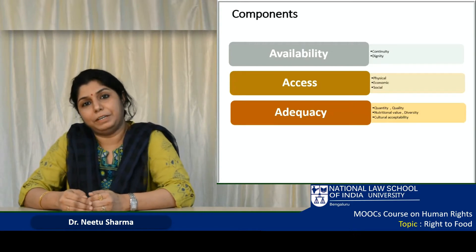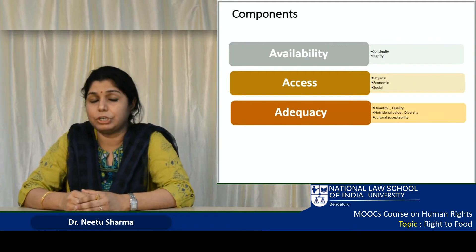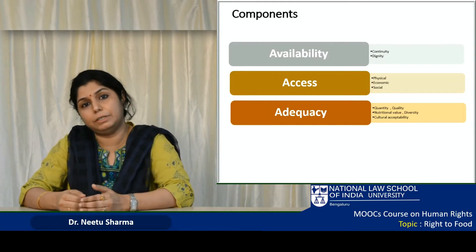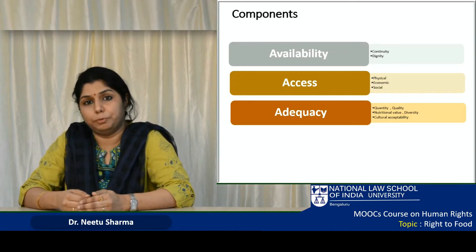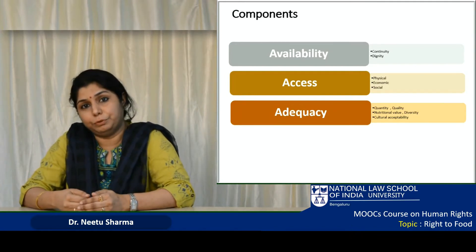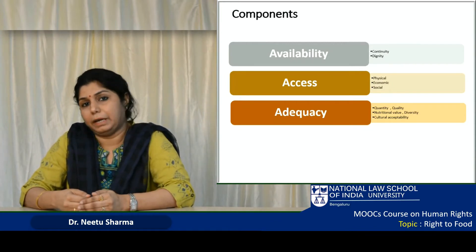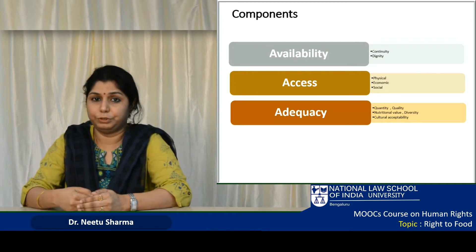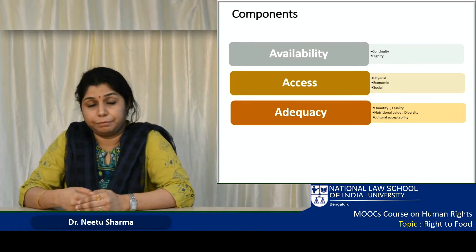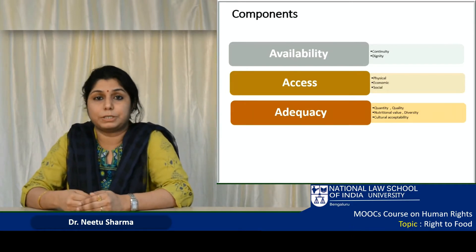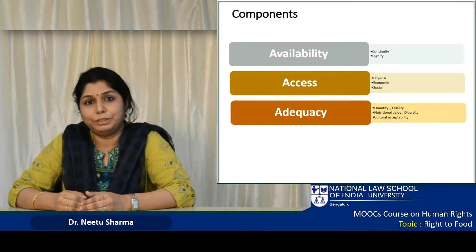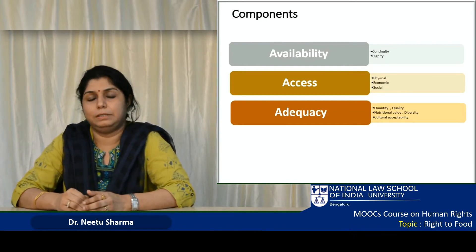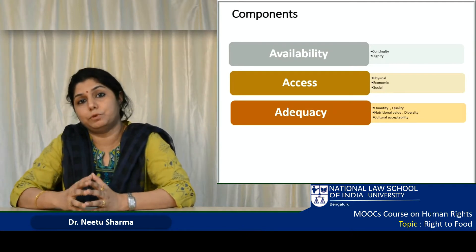If I do not get enough calories and enough quantity of food, my right to food gets violated. Beyond quantity, food should also be of sufficiently good quality — food should be safe, there should not be any contamination, and quality standards as described by the Food Safety and Standards Authority of India should be met. So if I am eating enough quantity of food that takes care of my hunger but the quality is not safe or not up to the mark as described by FSSAI, my right to food gets violated.